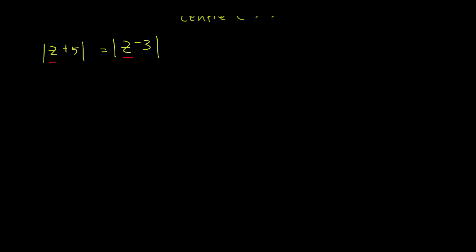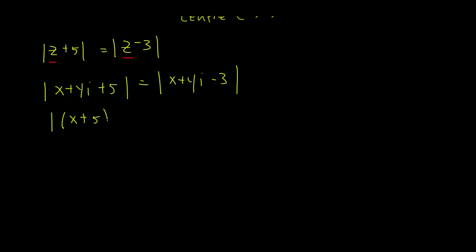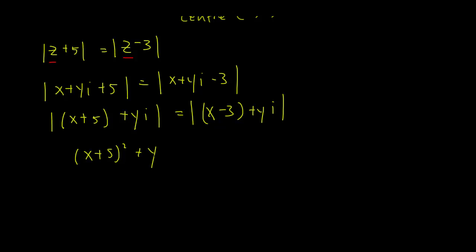Remember, the first step is to replace z with x plus yi on both sides. So that gives us x plus yi plus 5 equals x plus yi minus 3. Then we group the real and imaginary parts and take the modulus: x plus 5 squared plus y squared equals x minus 3 squared plus y squared. The y squared terms are common on both sides, so we cancel them out.